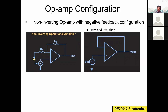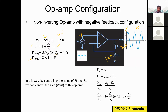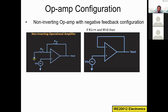Non-inverting op-amp with negative feedback configuration — this is the non-inverting op-amp we had seen before. We know that in an operational amplifier, the input impedance or input resistance is very high, but the output impedance or output resistance is almost zero. This is one of the important properties of the operational amplifier that we can use here.